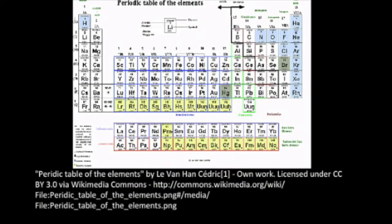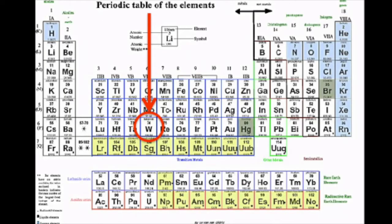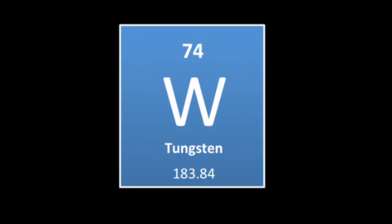Tungsten is a transition metal. It is shiny and grayish-white in color. Its atomic mass is 183.84 atomic mass units. And as I mentioned earlier, its atomic number is 74.